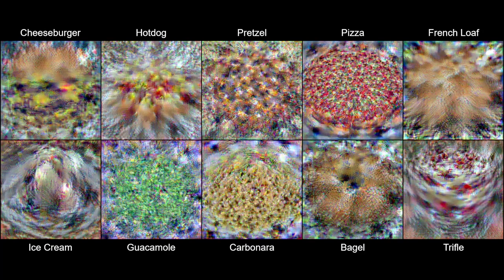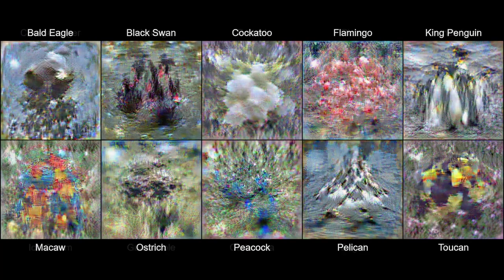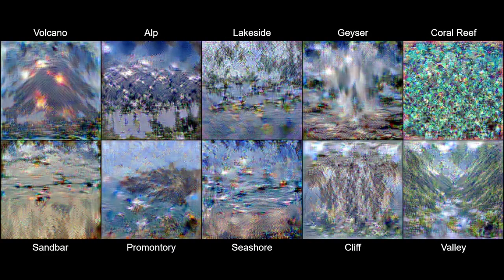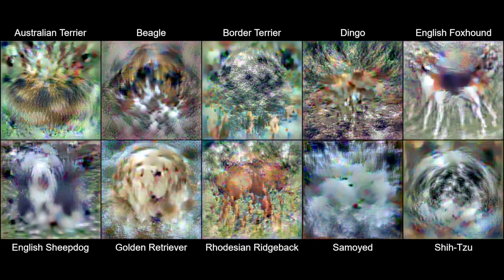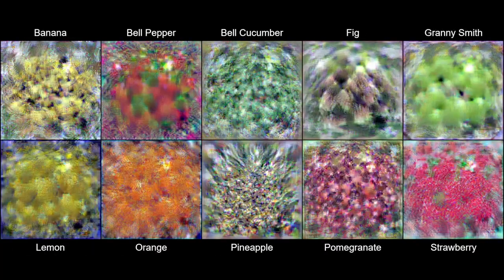Our method is also capable of distilling even higher resolution images. We distill many 10-class subsets of ImageNet, including food, birds, geography, dogs, and fruit.